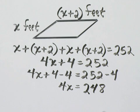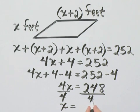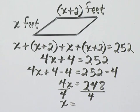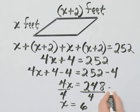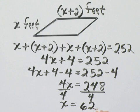There we go. How do we finish solving? Divide both sides by the coefficient of x which is 4. And then on the left side we have x. On the right side, let's see. 4 divides into 24 six times, and 4 divides into 8 two times. So we have that x is 62.